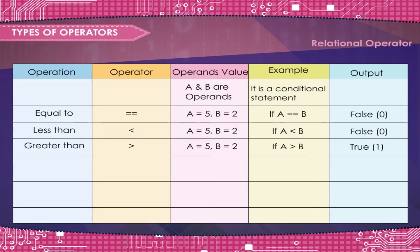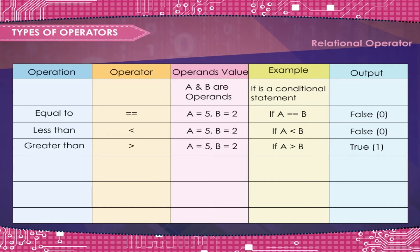Greater than: A is equal to 5, B is equal to 2. If A greater than B — True, 1.